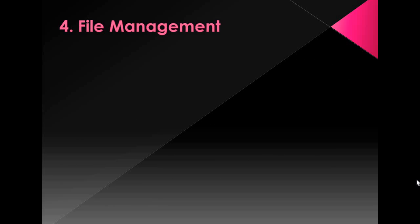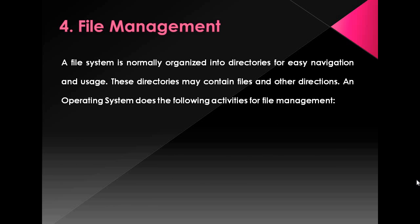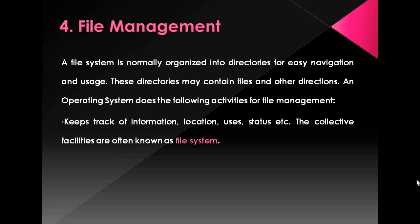The fourth function of the operating system is file management. A file is related information kept together in memory. When we keep all the files together we place them in a folder or directory. How these files and directories are stored in the hard disk together is known as the file system, which is managed by the operating system. A file system is normally organized into directories for easy navigation and usage. The operating system keeps track of information, location, usage, status, etc.